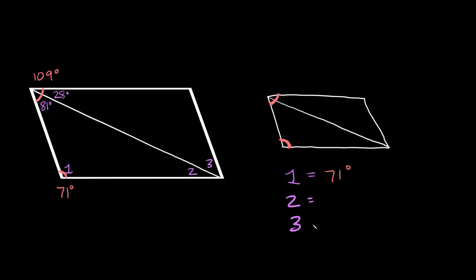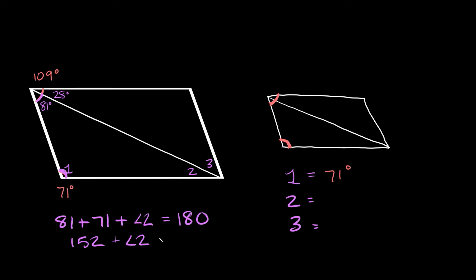Now how do we solve for angles 2 and 3? To solve for angle 2, we have a triangle and remember that all the angles inside any triangle add up to 180 degrees. We know one angle is 81 degrees, so 81 plus 71 plus angle 2 equals 180. 81 plus 71 is 152, so 152 plus angle 2 equals 180. Subtracting 152 from both sides, angle 2 is equal to 28 degrees.